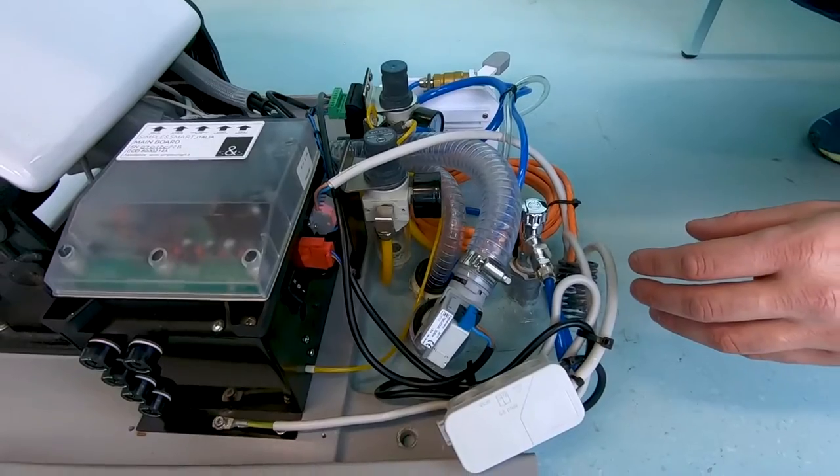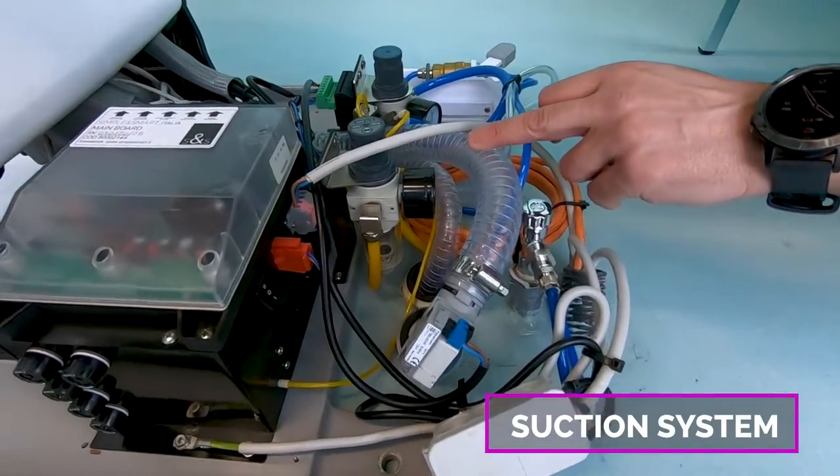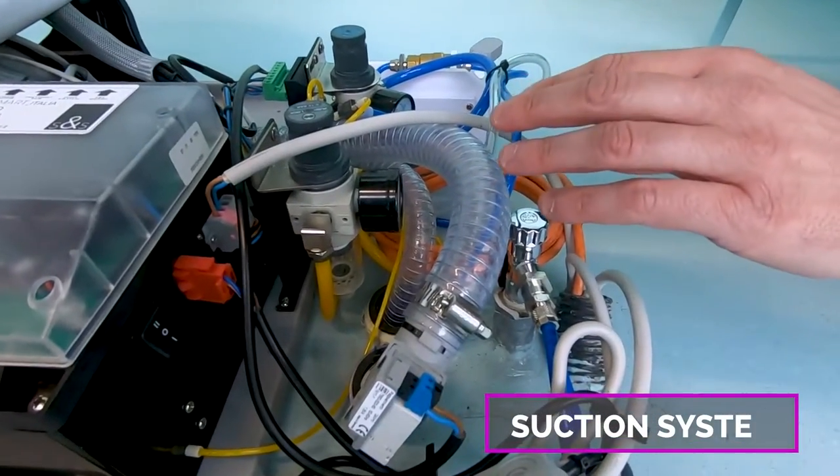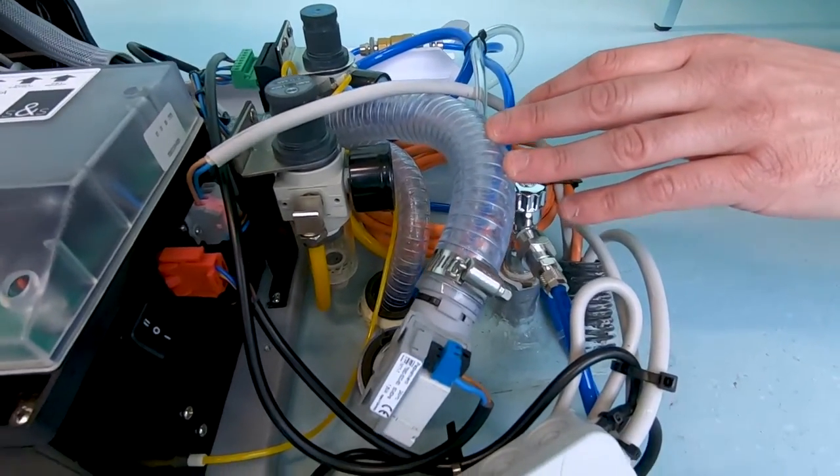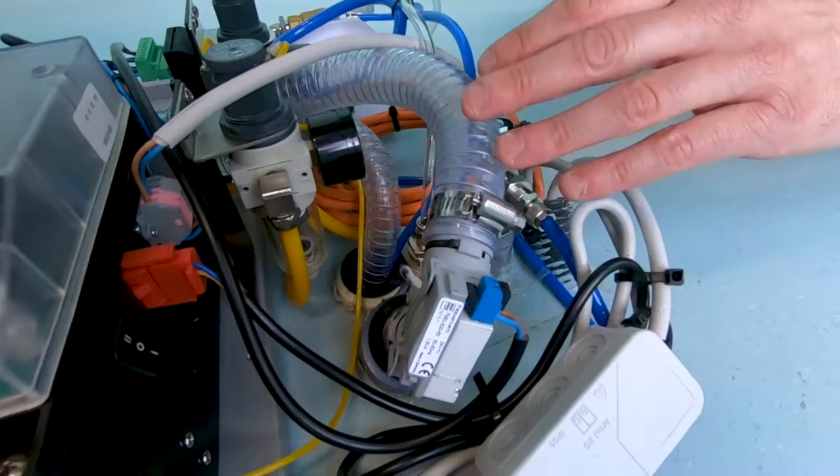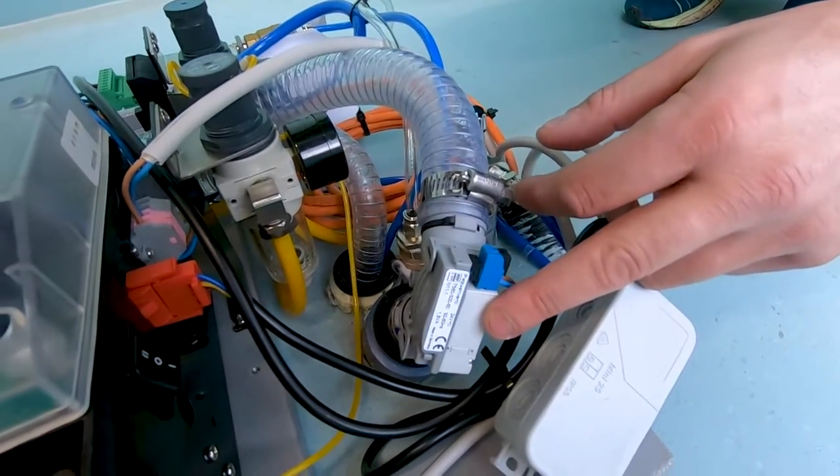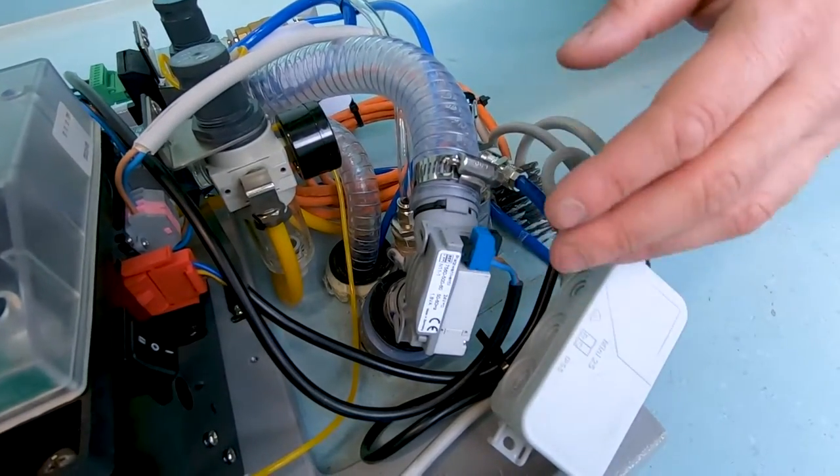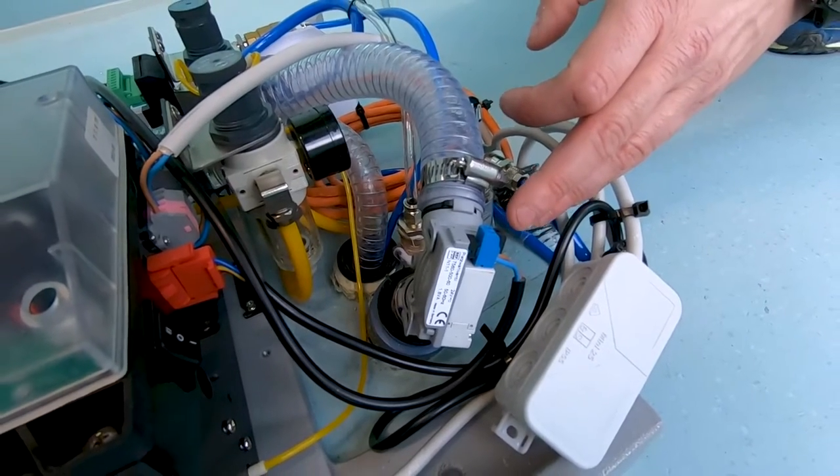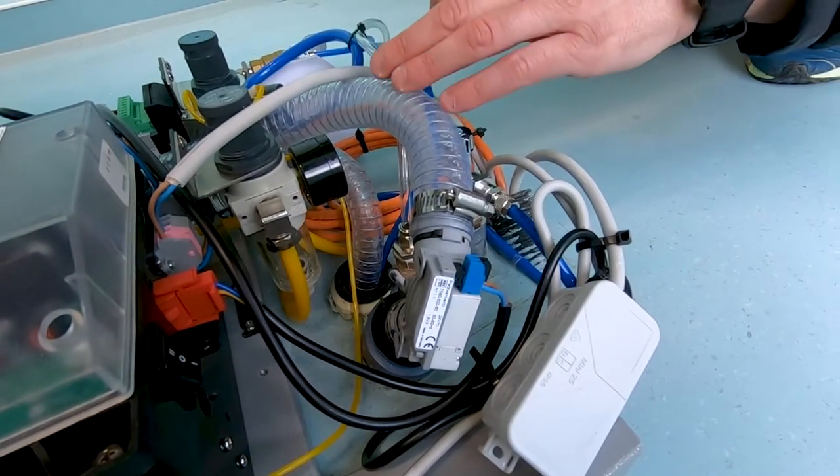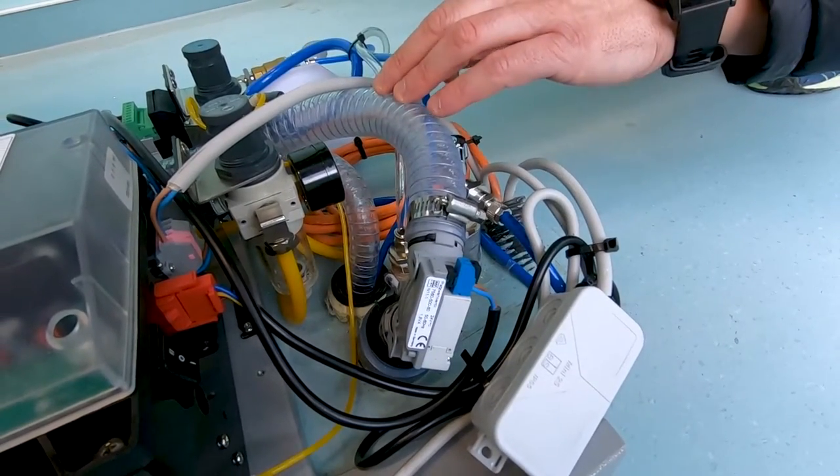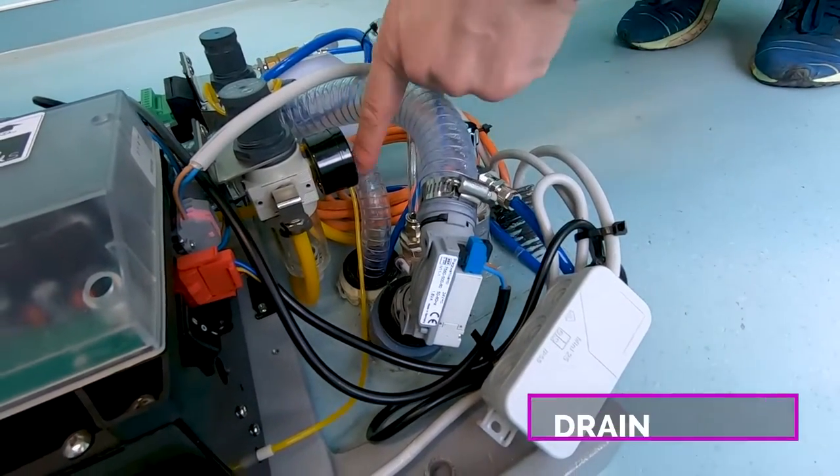Then we have the suction system, this big tube. Not every chair is the same, but this is quite standard. We have the suction with the selection valve from DUR. This permits closing the dental unit when the others are working.